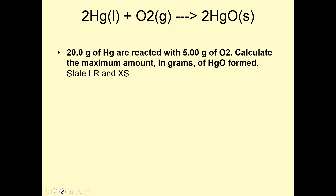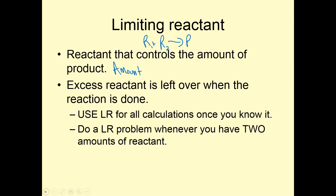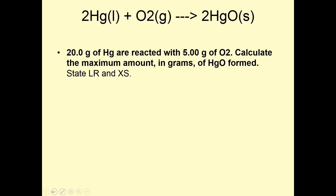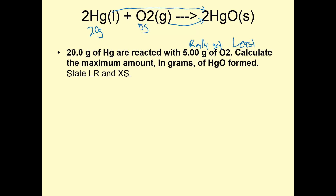Use limiting reactant for all calculations once you know it. Do a limiting reactant problem whenever you have two amounts of a reactant — it could be three, but if you've got every reactant. So if I have 20 grams of Hg and 5 grams of O2, if I convert these both into HgO, I probably won't get the exact same number. The amount that I really get is the least of those two answers.